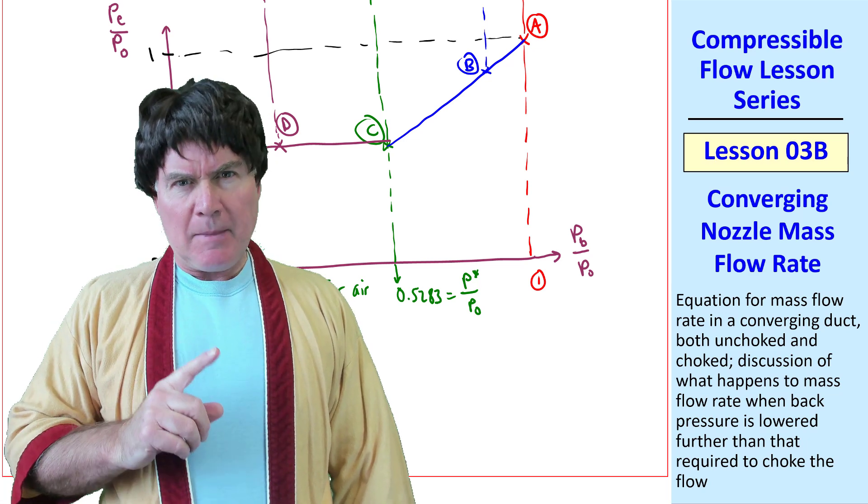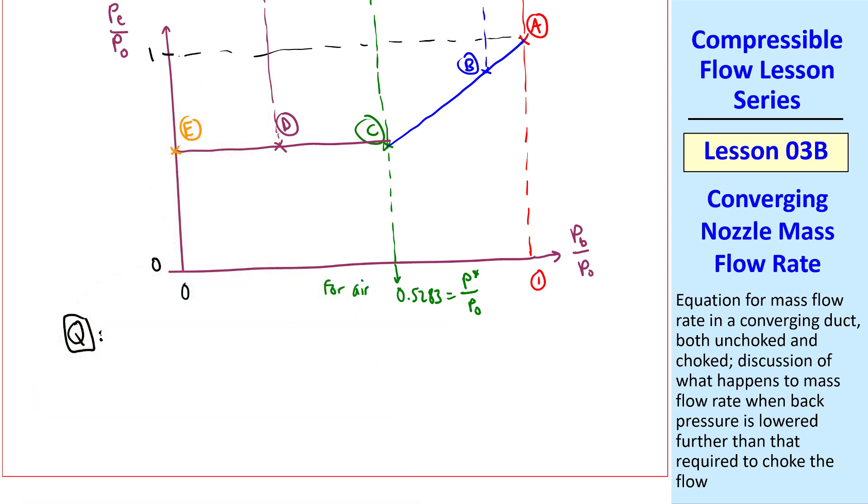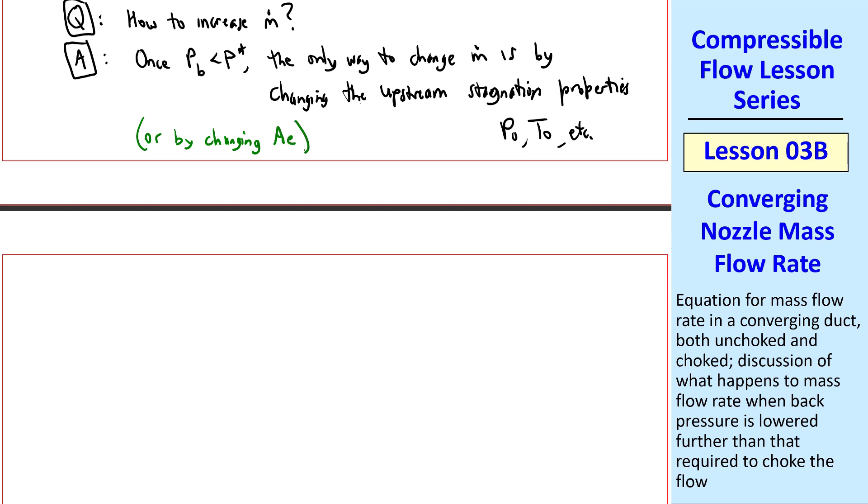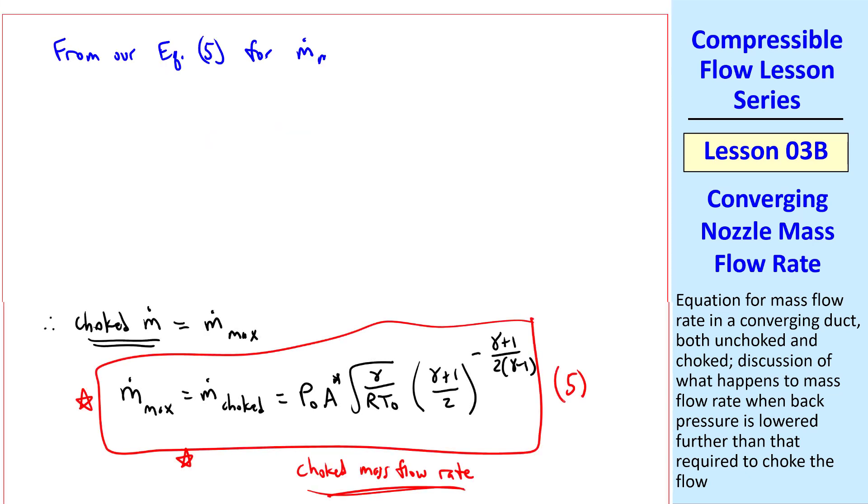Sir, once the flow is choked then, is there any way to change the mass flow rate? Well Joel, let's discuss this. I'll pose your question: how to increase m-dot? The answer is that once P_B is less than P*, the only way to change m-dot is by changing the upstream stagnation properties, P₀, T₀, etc., or by changing exit area A_E, of course, making the exit plane larger or smaller. From our equation 5 for m-dot max, just looking at the equation, we can see that m-dot goes up if P₀ goes up, since P₀ is in the numerator. In other words, higher tank pressure. That makes sense.